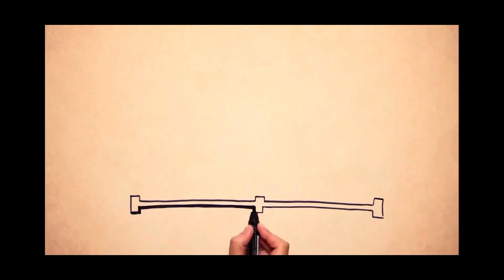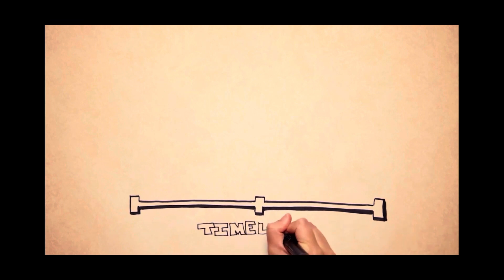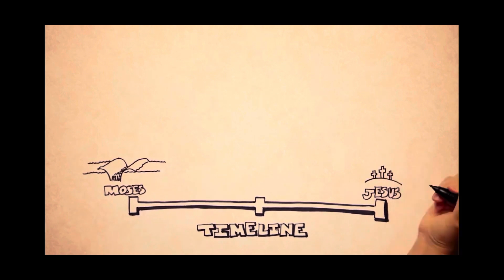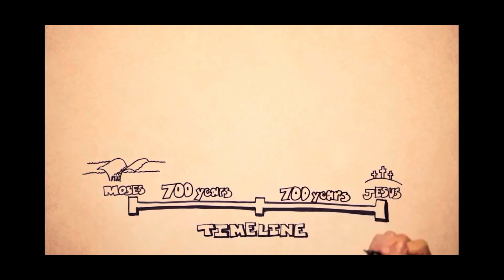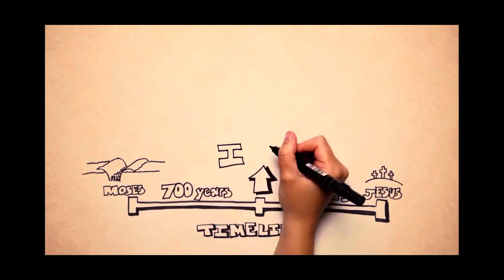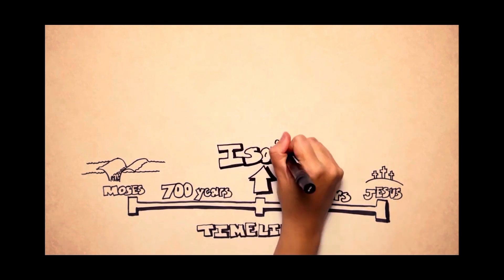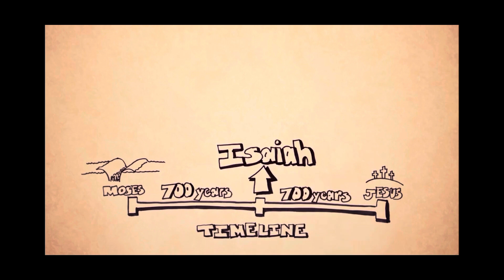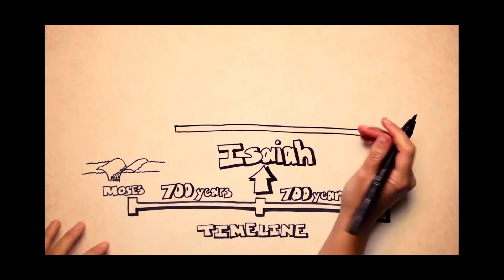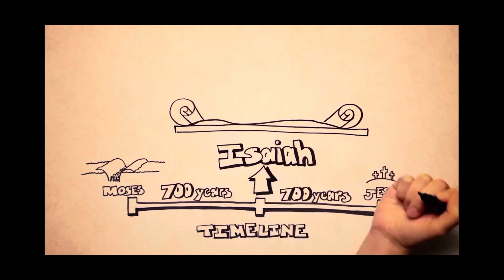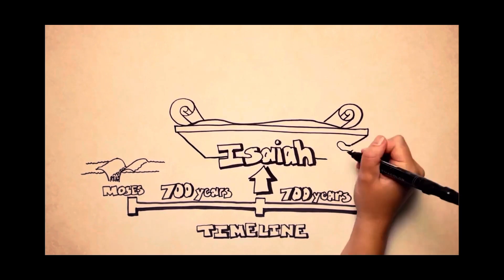Long, long ago, about 700 years after Moses crossed the Red Sea and about 700 years before Jesus died on the cross, there lived a man named Isaiah. He was a prophet, or someone whom God chooses to speak for him. For a long time, God had been sending prophets to tell others what God wanted them to hear.